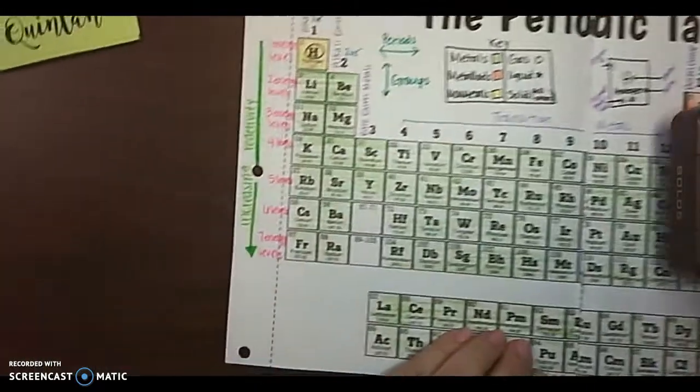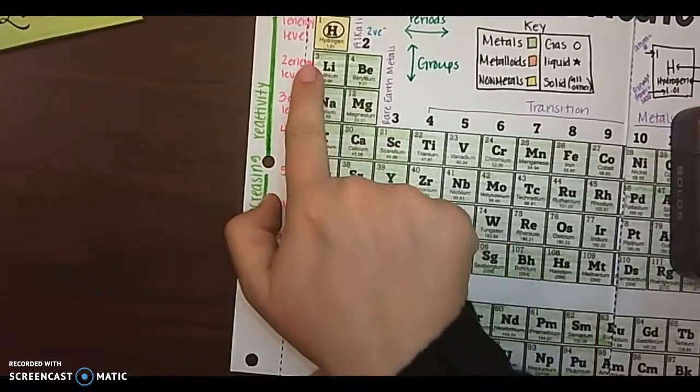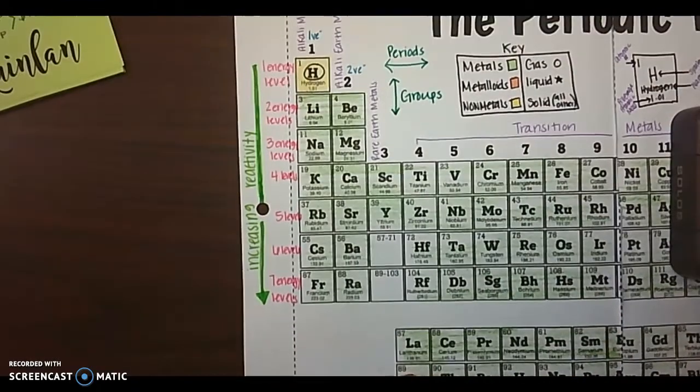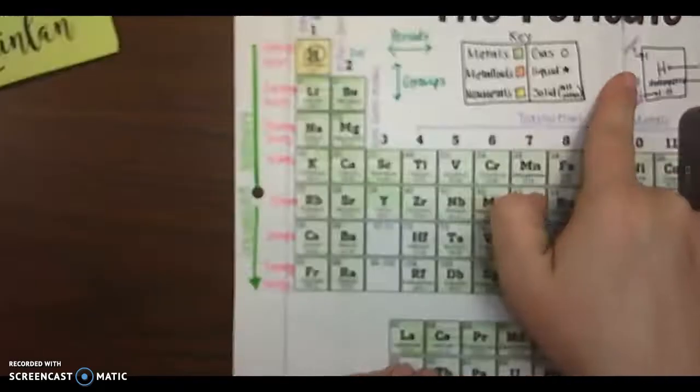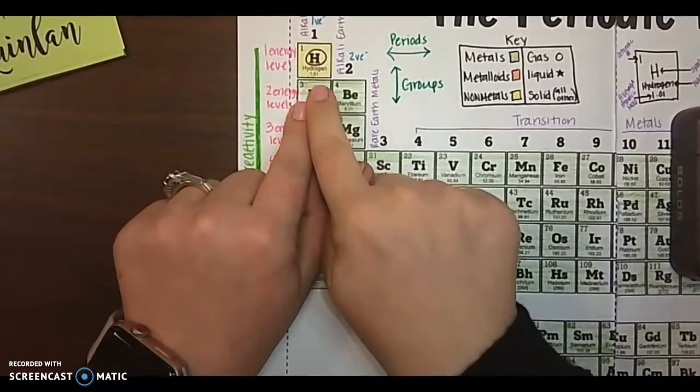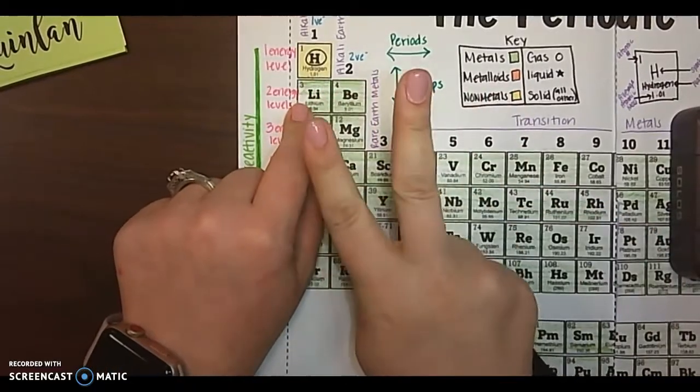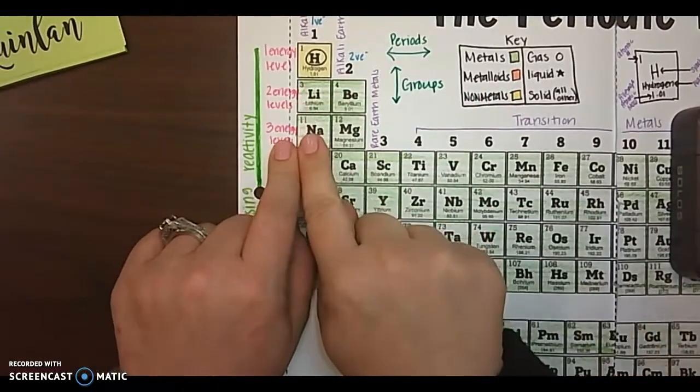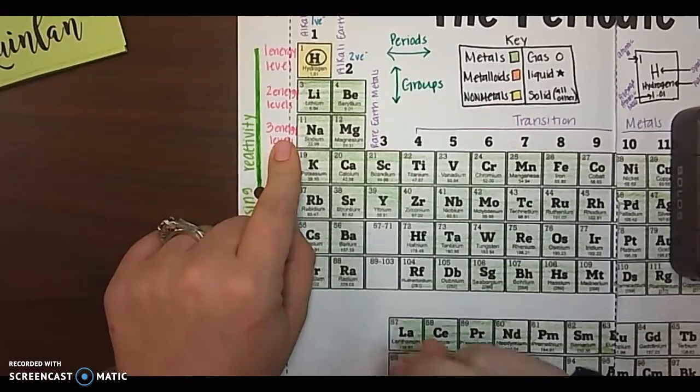Now we're going to go over here and we talked about how when we go horizontal, those are called our periods. So in period one, there is only one energy level. In period two, there are two energy levels. Period three, there are three energy levels.